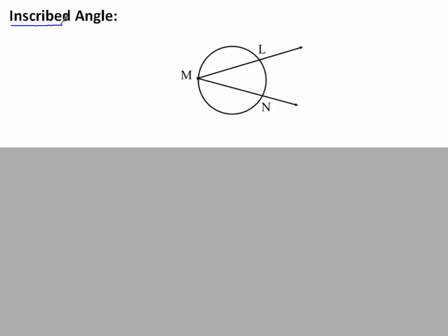Inscribed angle. An inscribed angle is an angle, but this time the vertex is on the circle. Notice in this picture the vertex of the angle on the circle, unlike a central angle where the vertex was the center. Now the sides of this angle I drew as secants, although they can really be any types of lines.